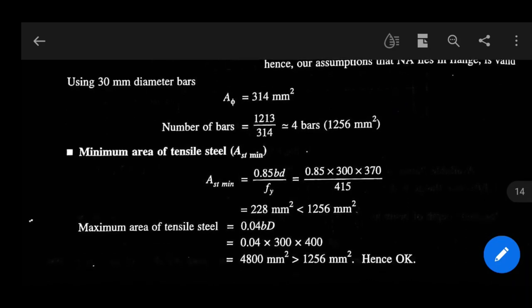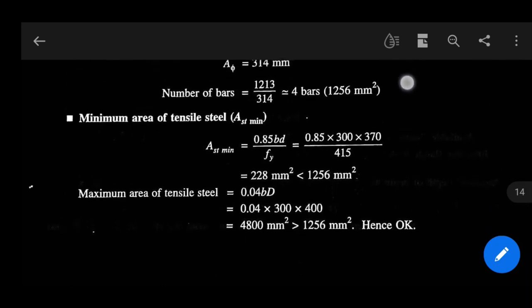So maximum area of tensile steel is 0.04 bd, that equals 0.04 into 300 into 400, that equals 4800 mm square, which is greater than 1256 mm square. So area of steel provided lies between minimum area of steel required and maximum area of tensile steel required. Hence the design is safe. Okay.